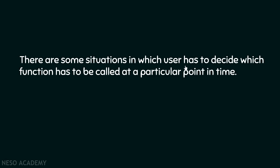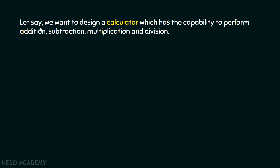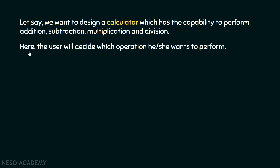There are some situations in which the user has to decide which function has to be called at a particular point in time. For example, suppose we want to design a calculator which has the capability to perform addition, subtraction, multiplication, and division. Here, the user will decide which operation he or she wants to perform.